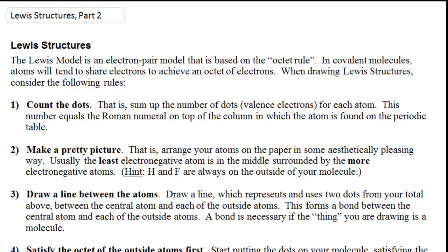The first thing we're going to do is count the dots — count the valence electrons. Remember, it's valence electrons that are involved in bonding. We can easily do that by looking at the group number of the family the elements are in. We're going to make a pretty picture by putting the least electronegative element in the center. Electronegativity is easy to remember because fluorine is the most electronegative element. It increases across toward fluorine and increases up toward fluorine. Fluorine really wants to attract electrons to itself in a bond — that's what we mean by electronegativity.